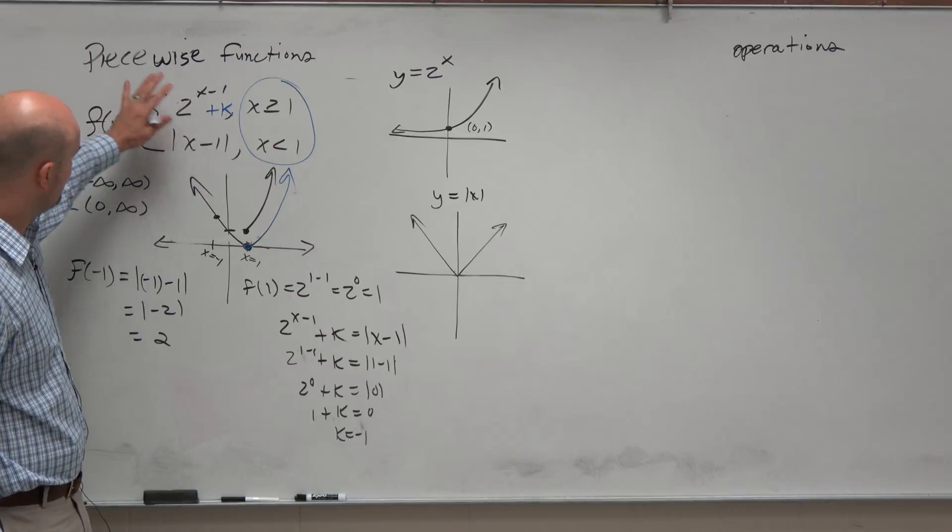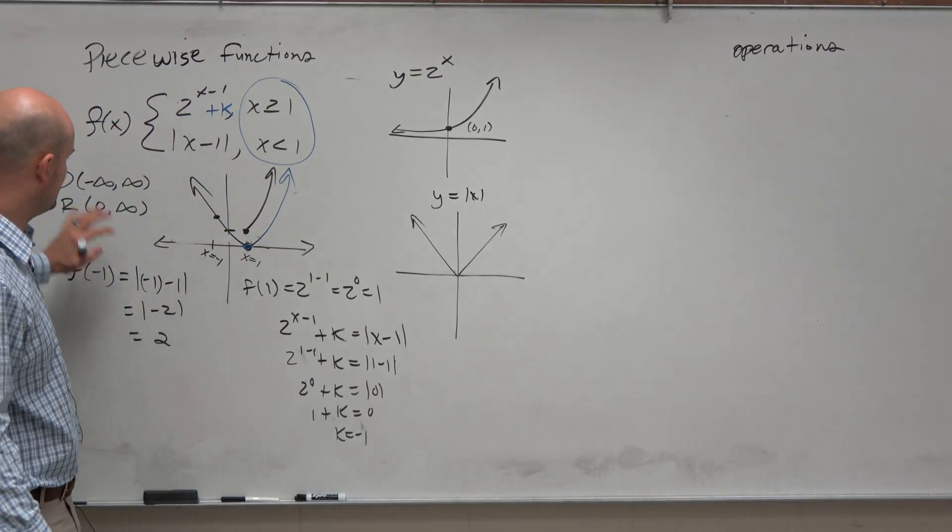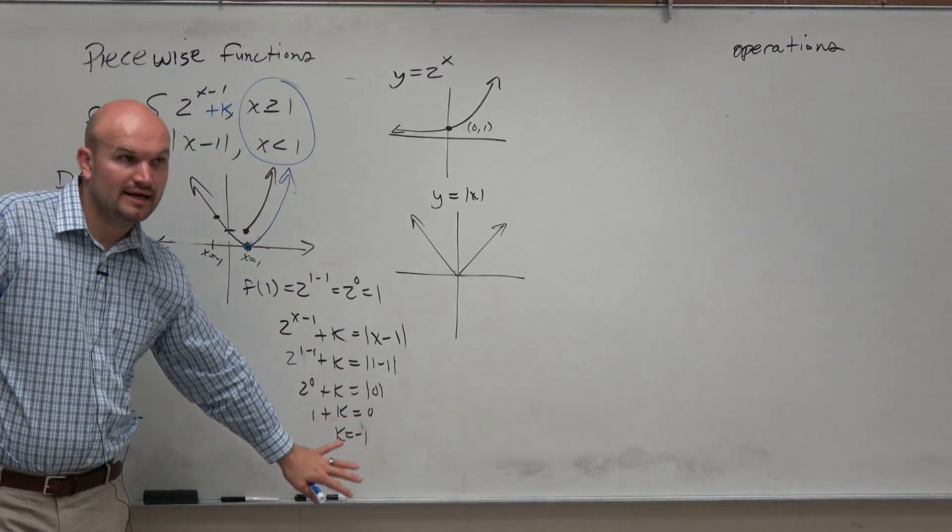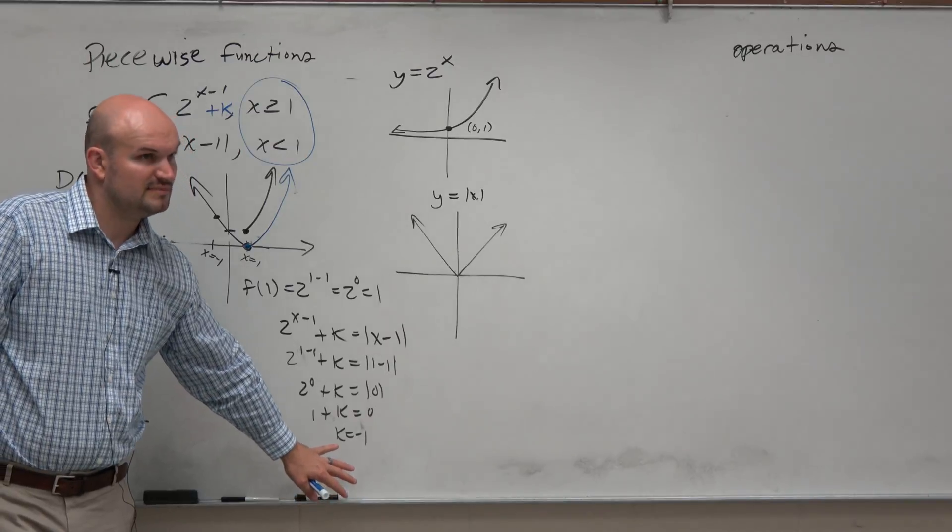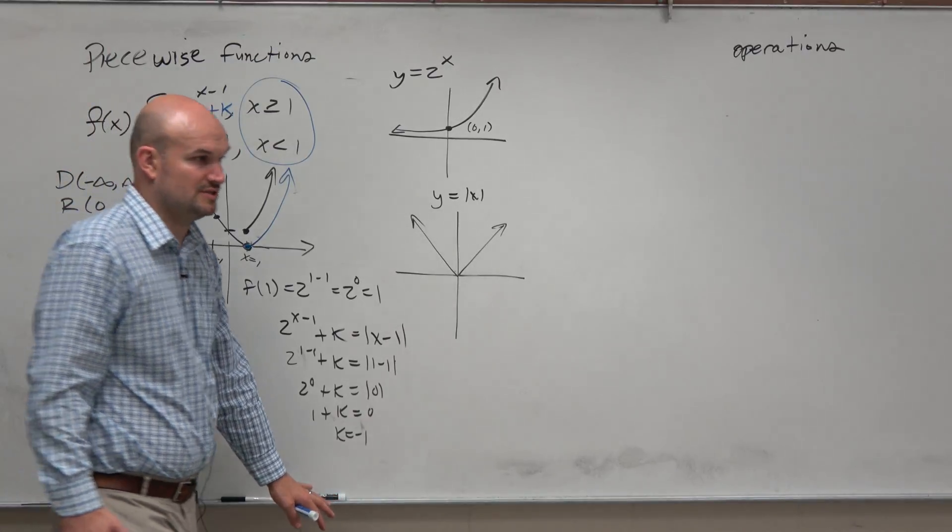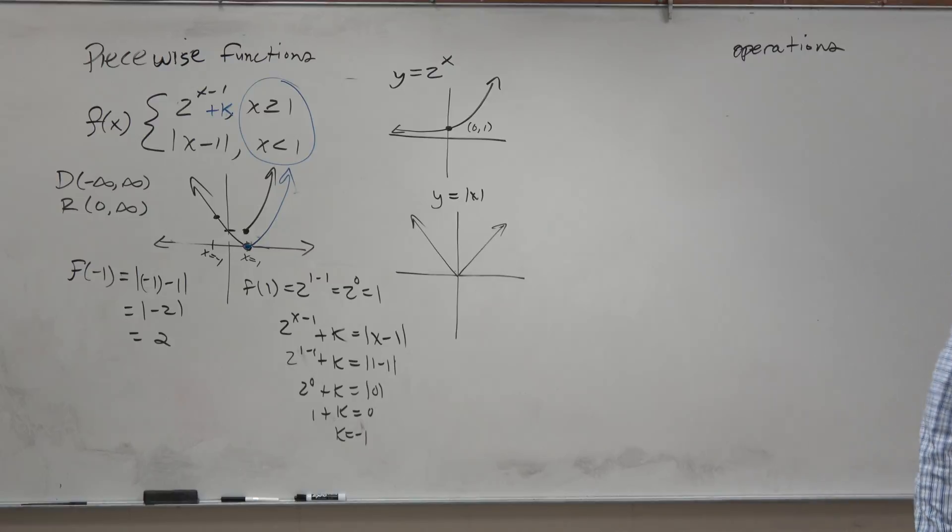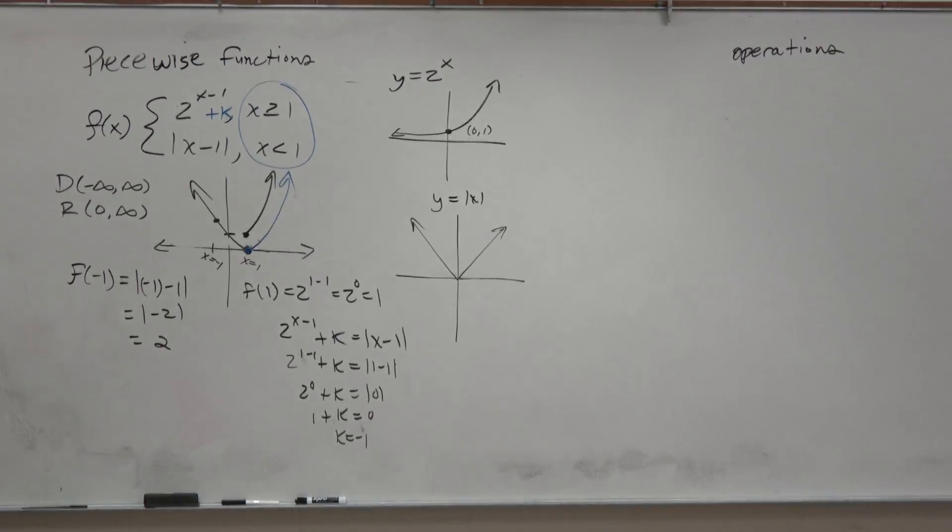So again, graph, domain, discontinuities, evaluate, and find the value k. That's basically what we covered in Piecewise Functions. So what did I miss or what questions do you guys still have that I can help with you before I move on?